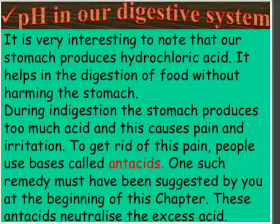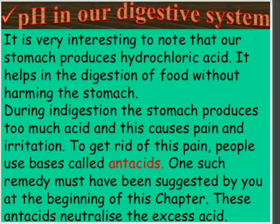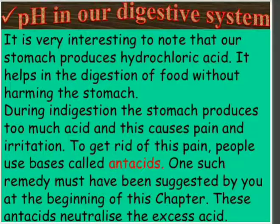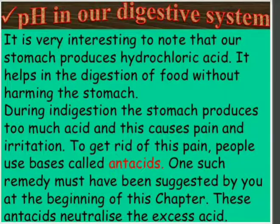pH is the power of hydrogen and in many aspects pH is related to our life. We have discussed that if the pH decreases then the water becomes acidic and it gives rise to acid rain. Whenever such water is added to a river or any water resource, it will increase the acidic nature of that water resource and make aquatic life unfit, as there are many aquatic plants and animals living in it.